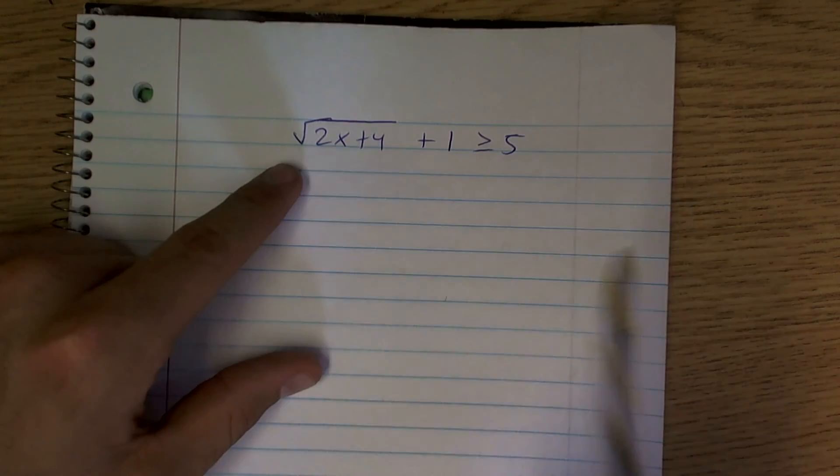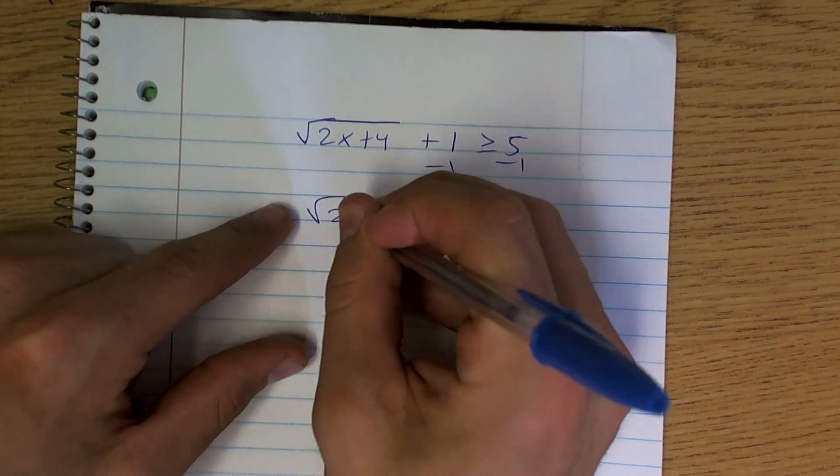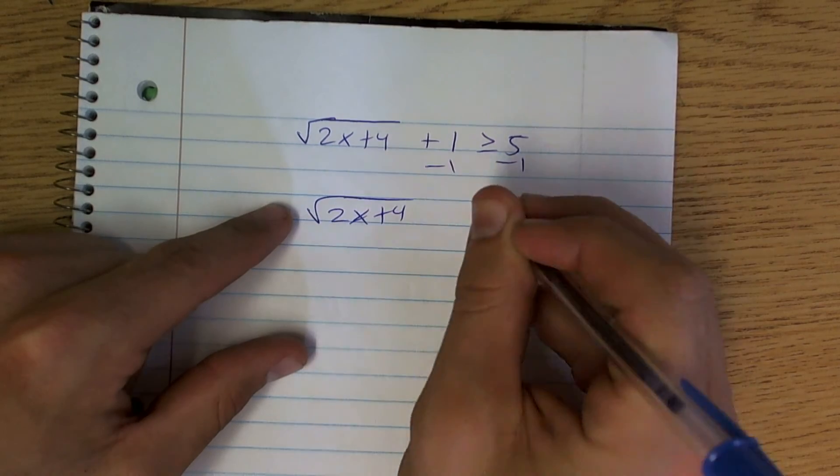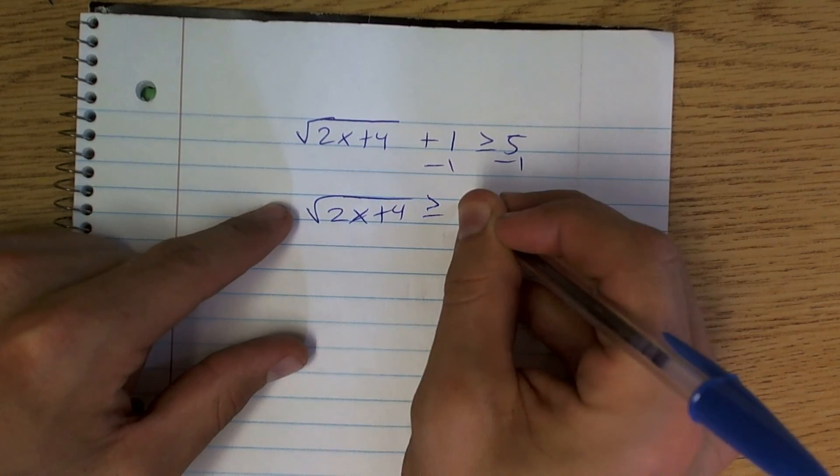All right? So what we're going to do is we're going to have to subtract one, so we have square root of 2x plus 4 now is greater than or equal to 4.